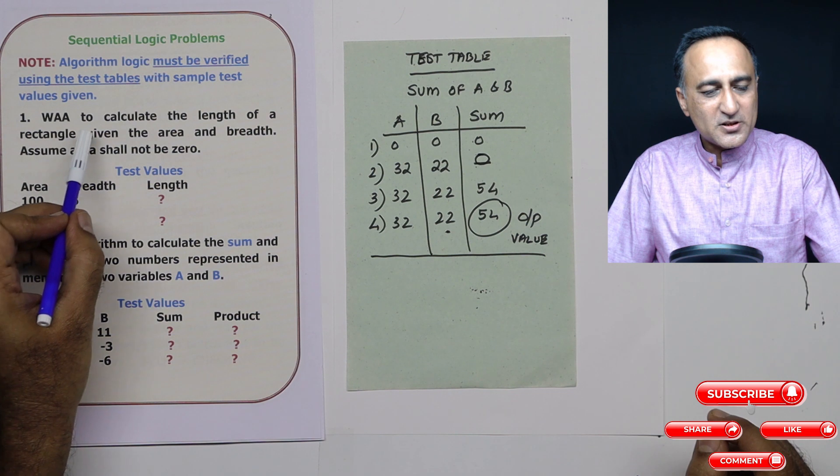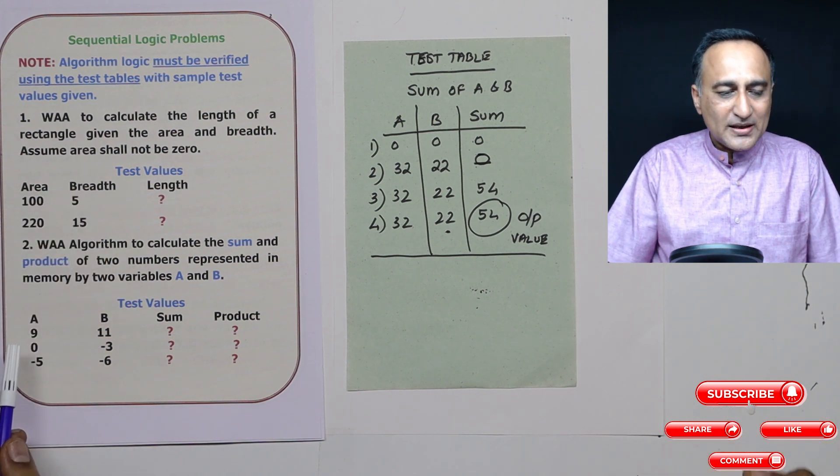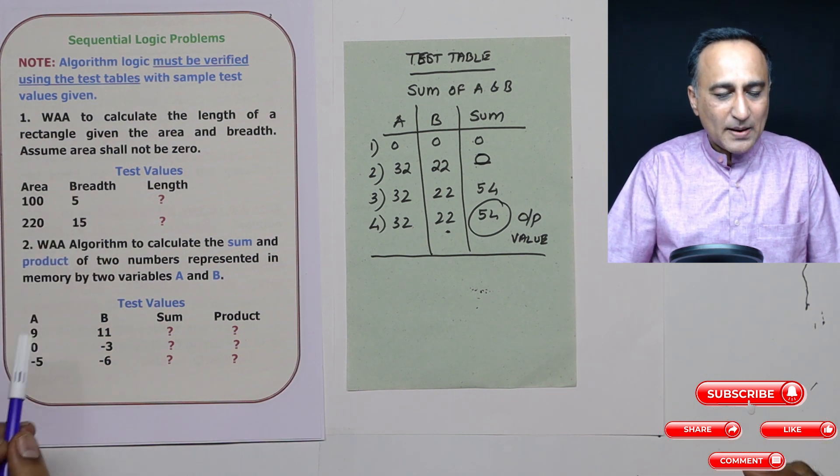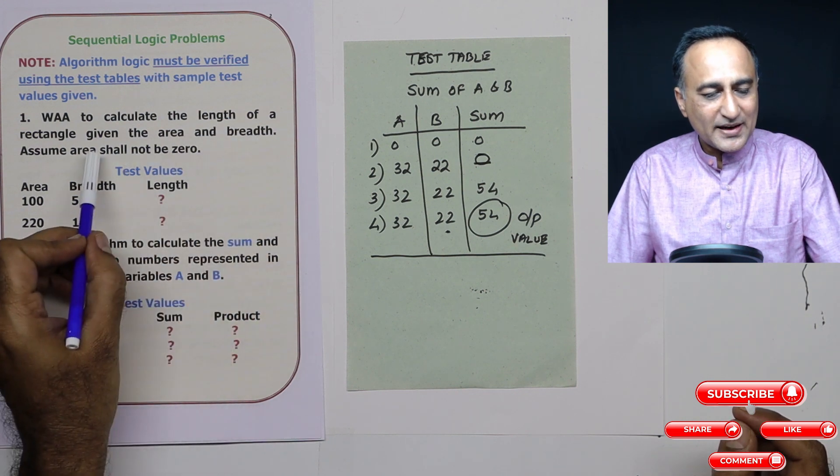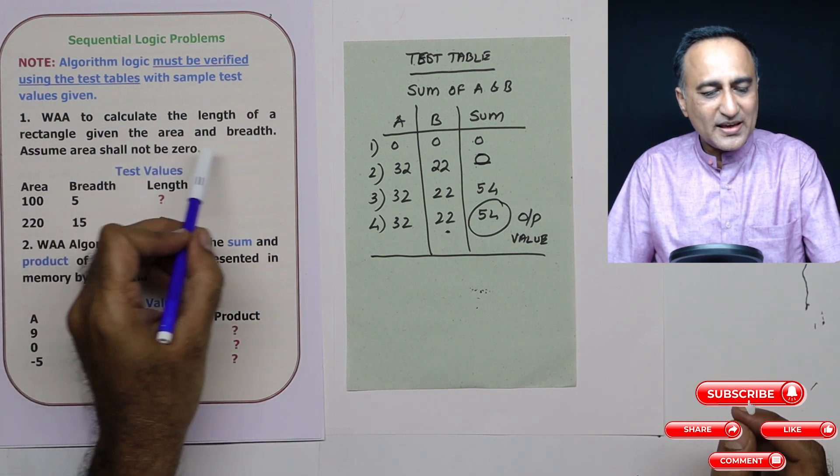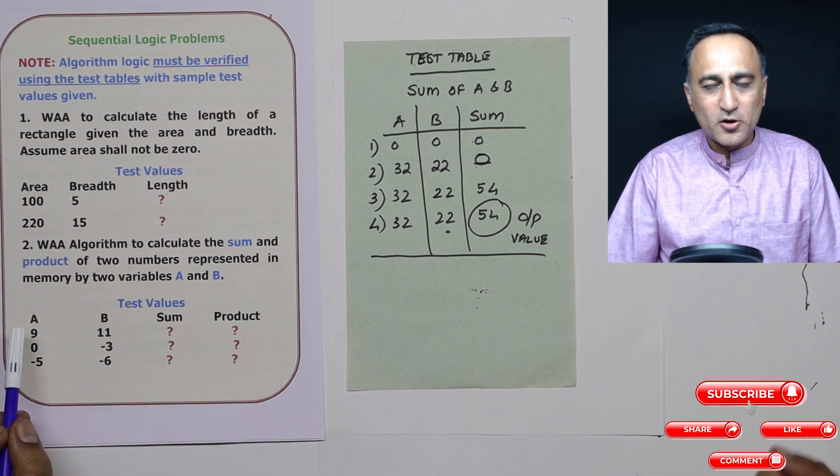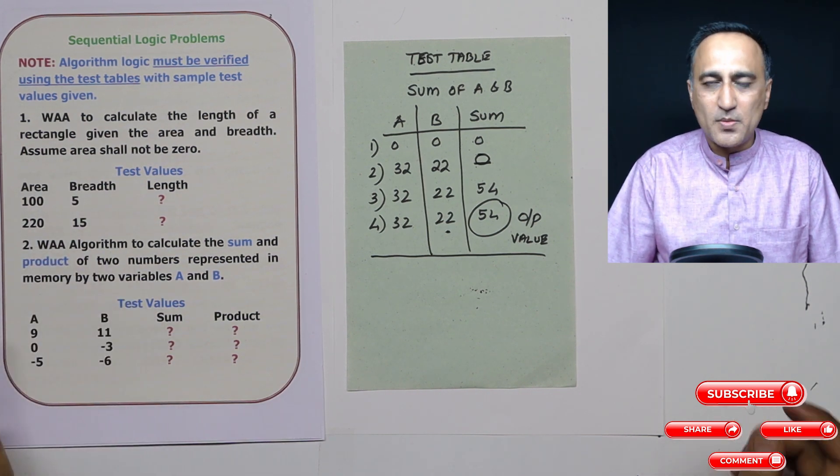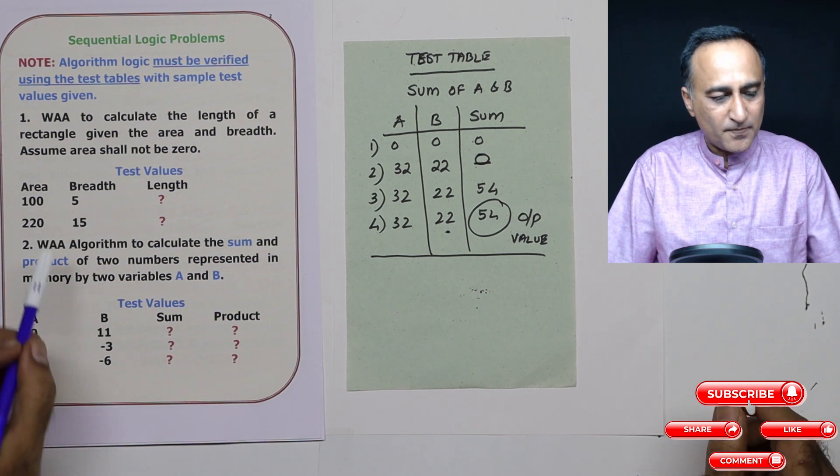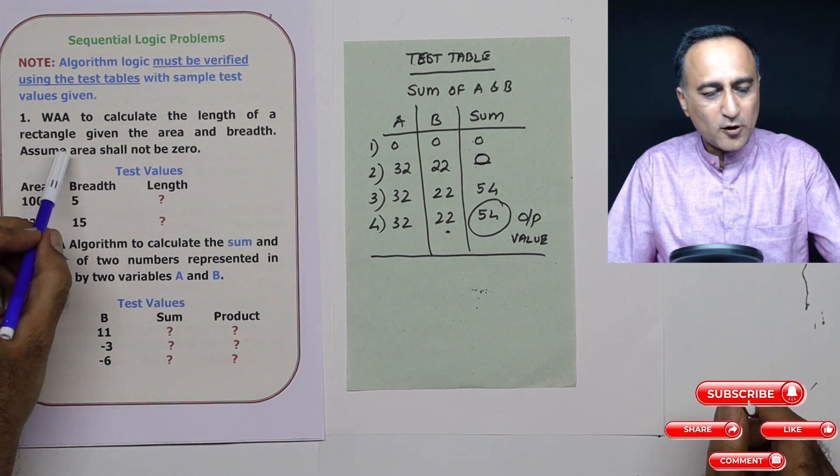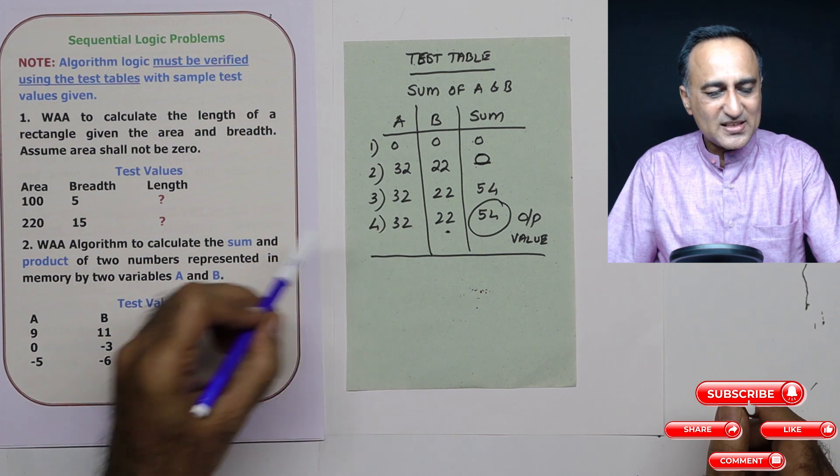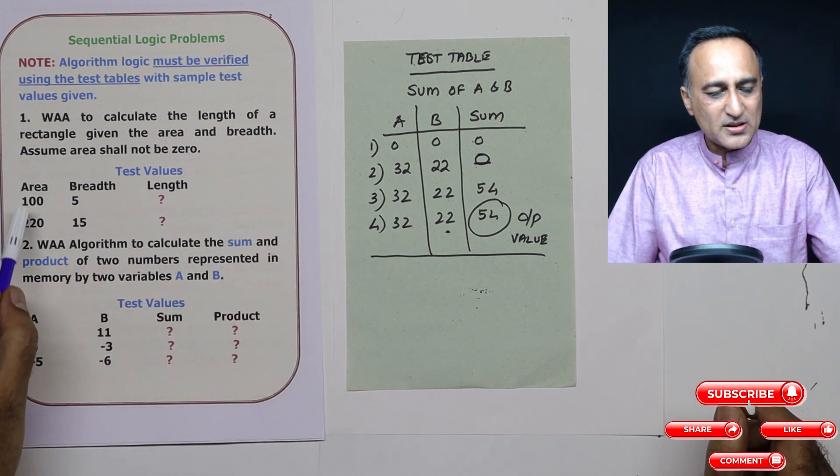For example, in the first algorithm, I'm asking you to calculate the length of a rectangle, assuming you're given the area and breadth. You should make an assumption that area is never going to be zero because if area is zero, you're going to have different problems, I don't want to deal with it right now. So you will have to write the algorithm, do a testing like this and see whether you're getting the correct length using these values.